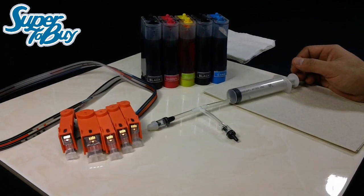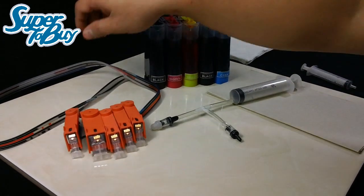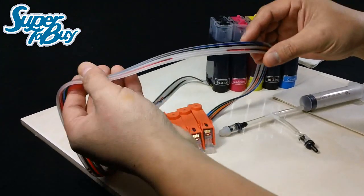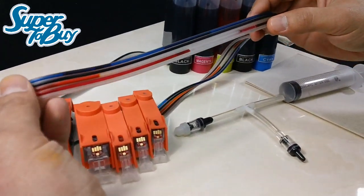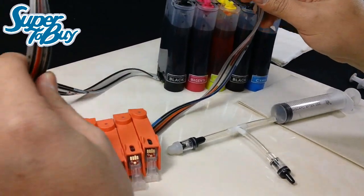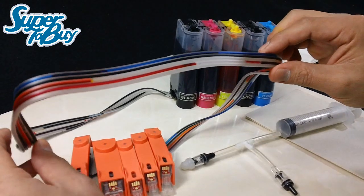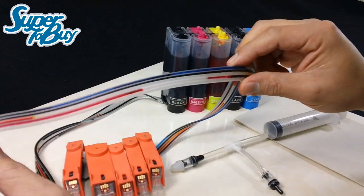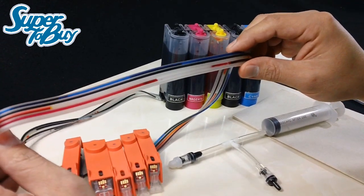When you receive a continuous ink system, sometimes you'll receive an air line such as this. You can see there's a considerable amount of air bubbles in this line, which can hinder the performance of your CIS system.